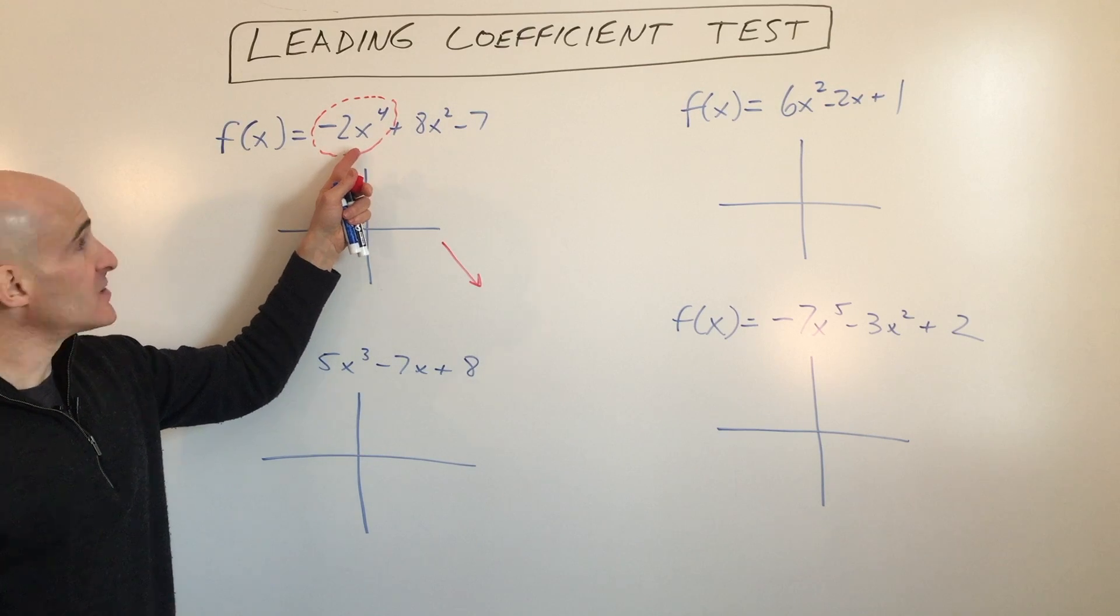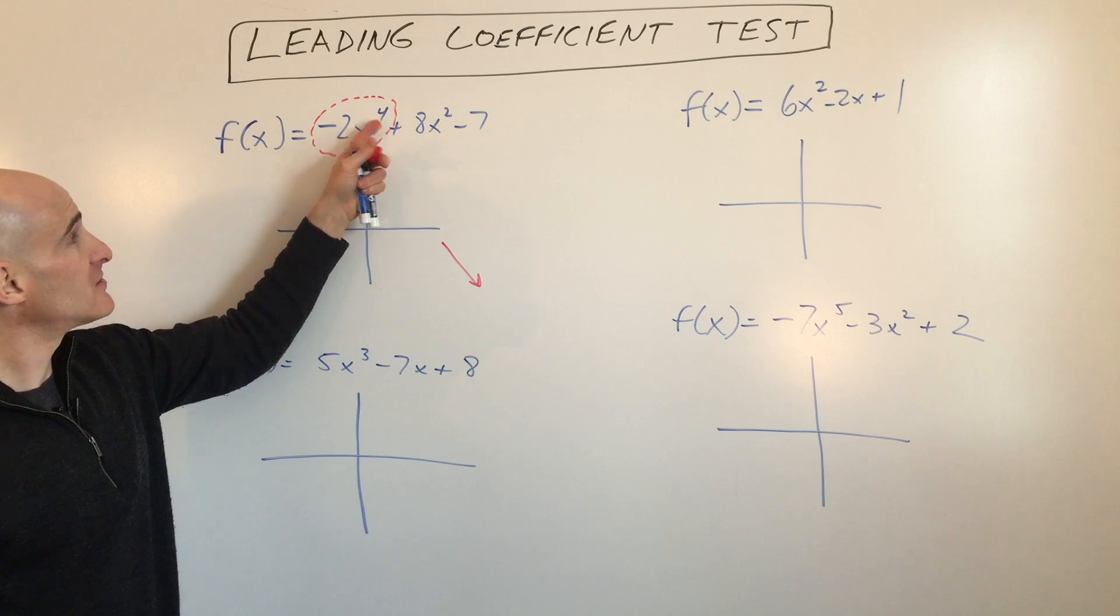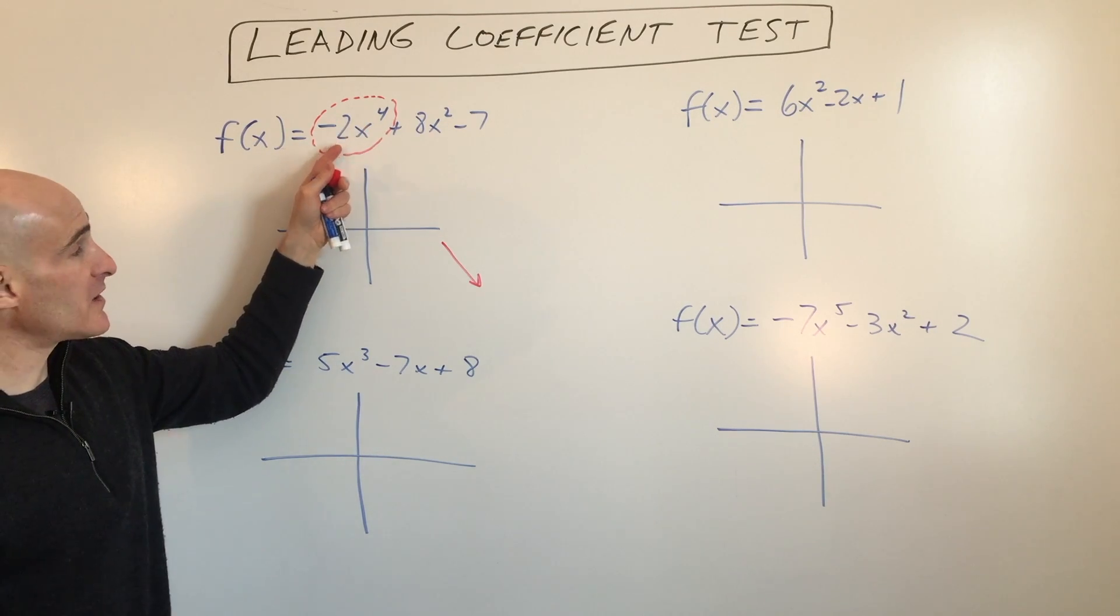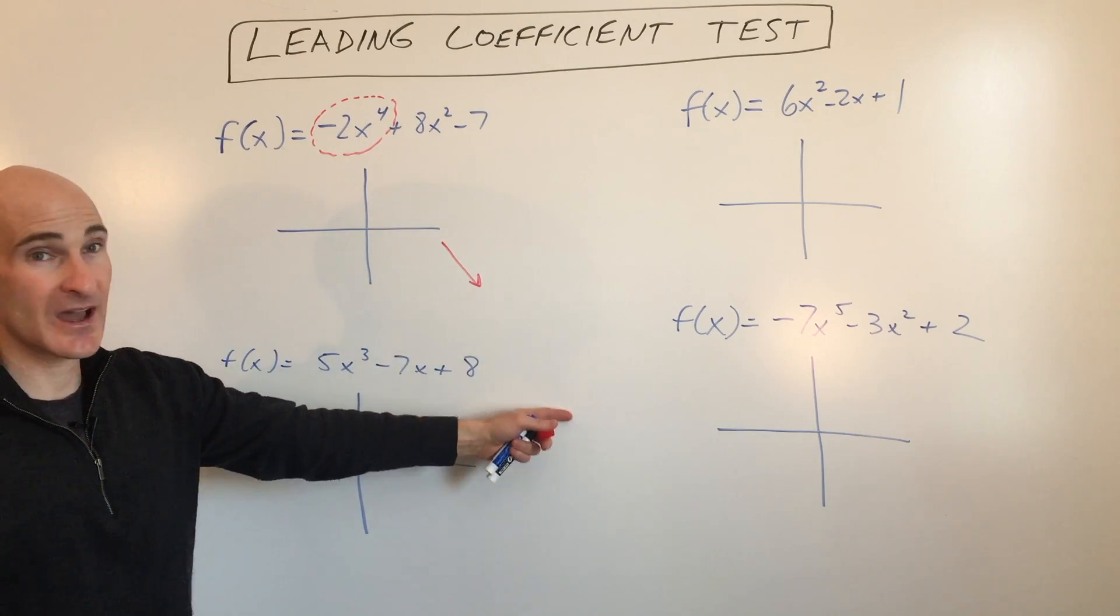If you want to test it, you can just put in 10, for example. 10 to the fourth is 10,000 times negative two is negative 20,000, and you can see that as x is going to the right, this is going down towards negative 20,000.